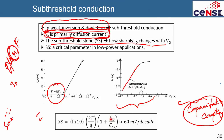If CD/Cox becomes comparable to 1, the sub-threshold slope worsens to 70, 80, or 100 mV/decade, meaning you must apply even more voltage for the same current change per decade. If instead of 60 you have 100 mV/decade, you must change the gate voltage by 0.1 V for one order of magnitude change in current, which drains more charge from the battery.